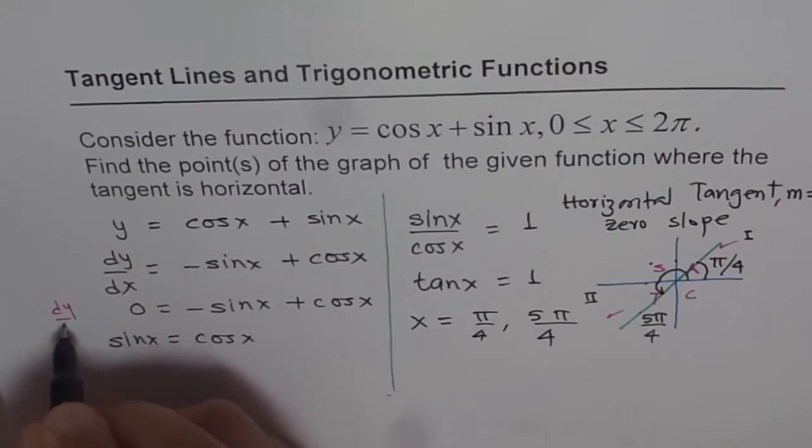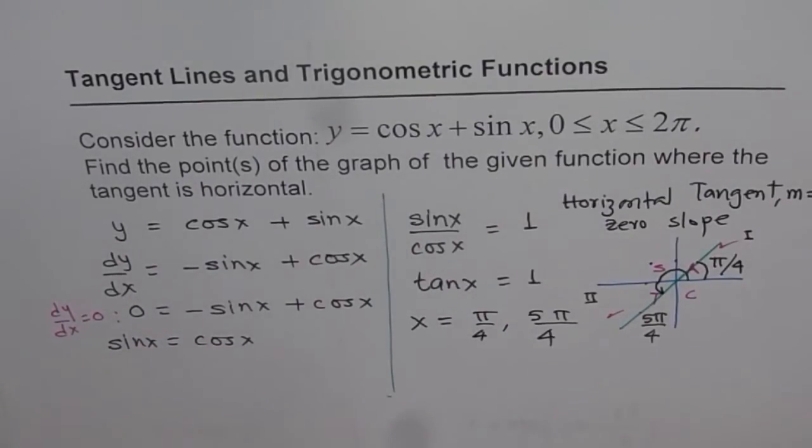If I write dy/dx equal to 0, that means horizontal tangent. So we get minus sin x plus cos x equals this value. From here we get the value of x. When we say points, we need to find the value of y also. I was forgetting it, so it's good to read and go back.